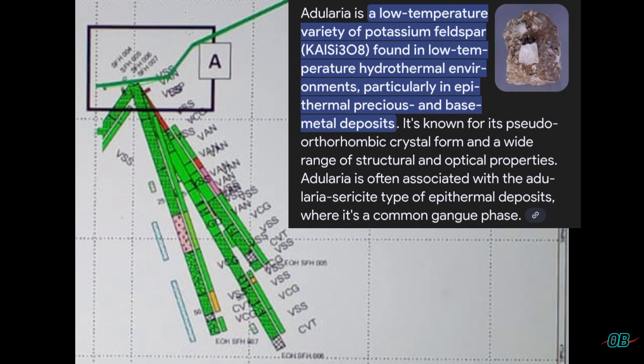Adularia: a low-temperature variety of potassium feldspar minerals, found in low-temperature hydrothermal environments, particularly in epithermal, precious, and base metal deposits.